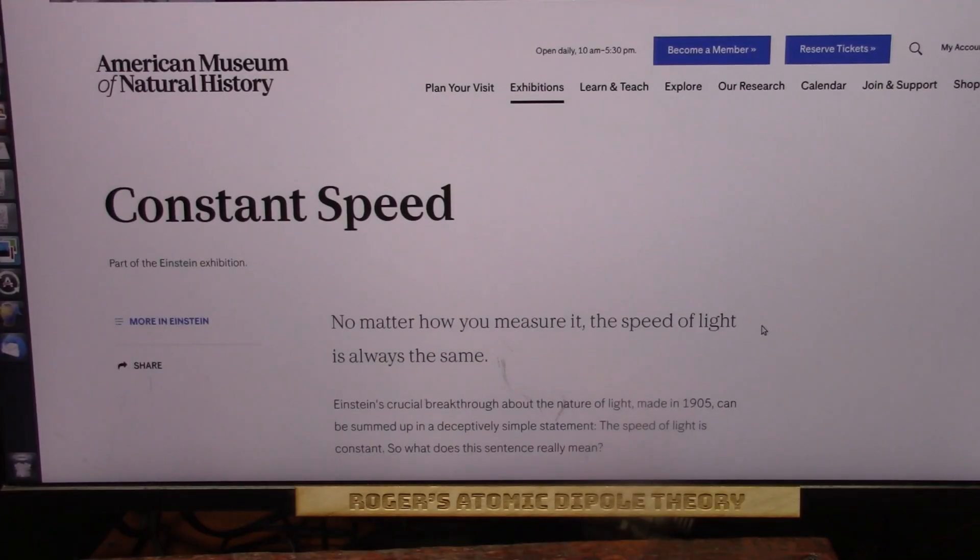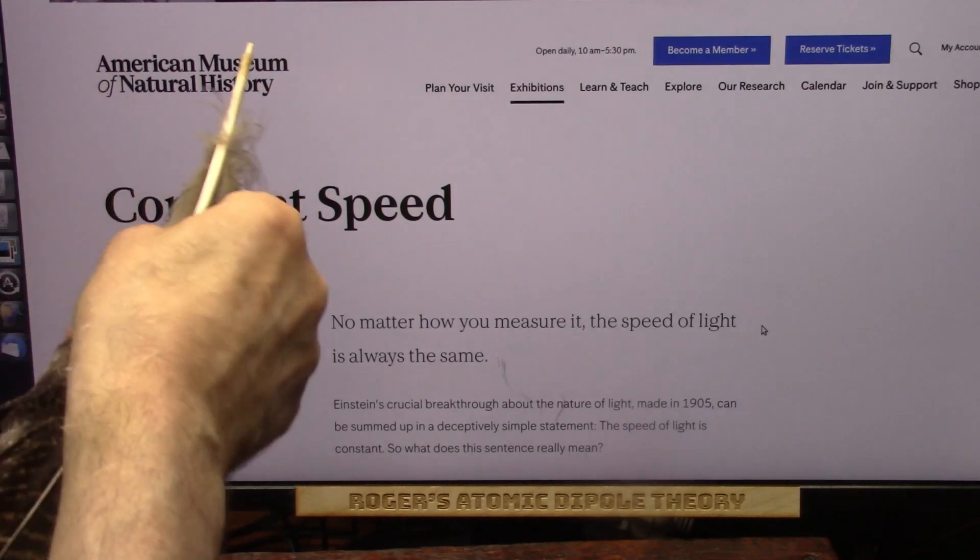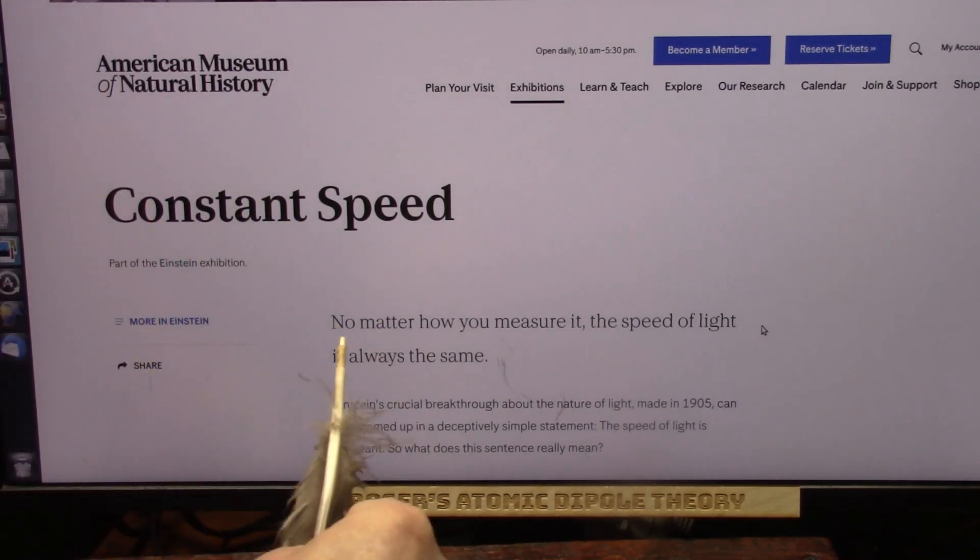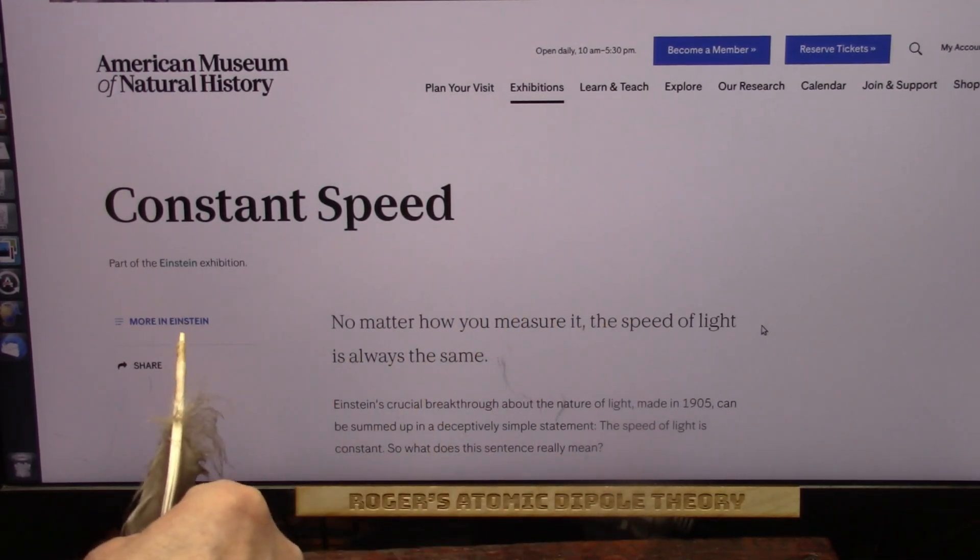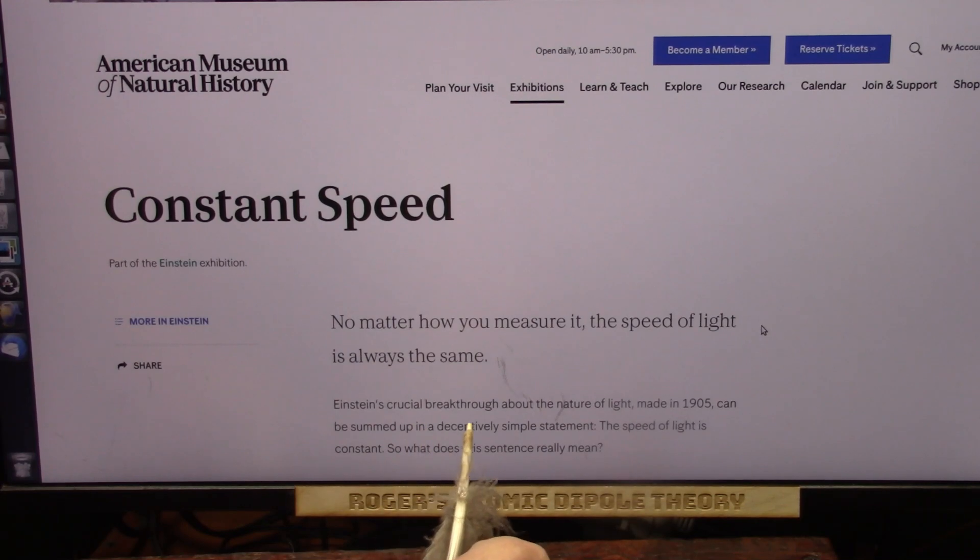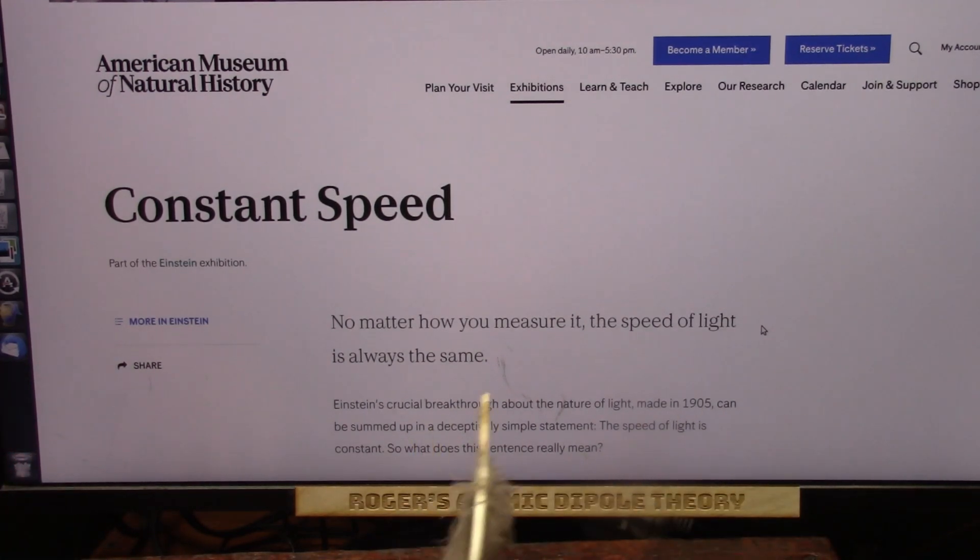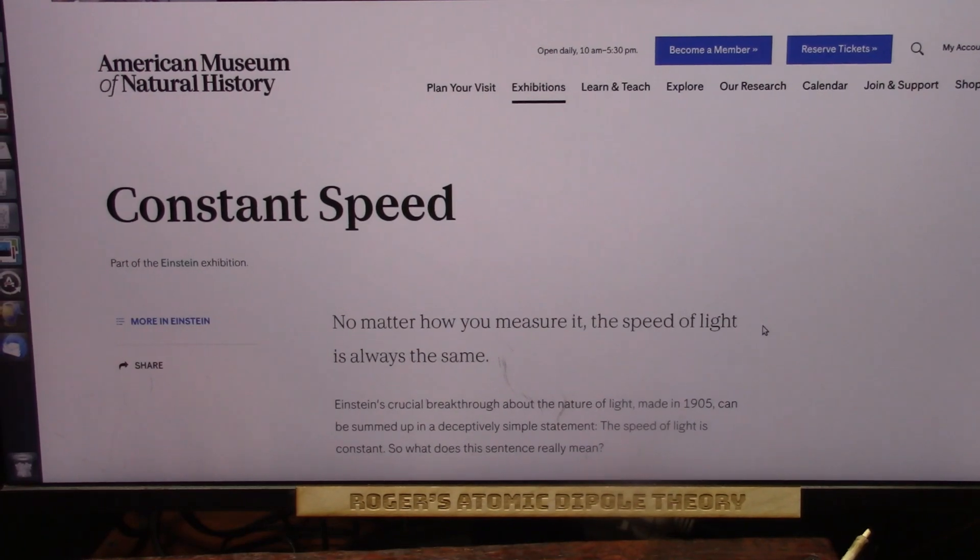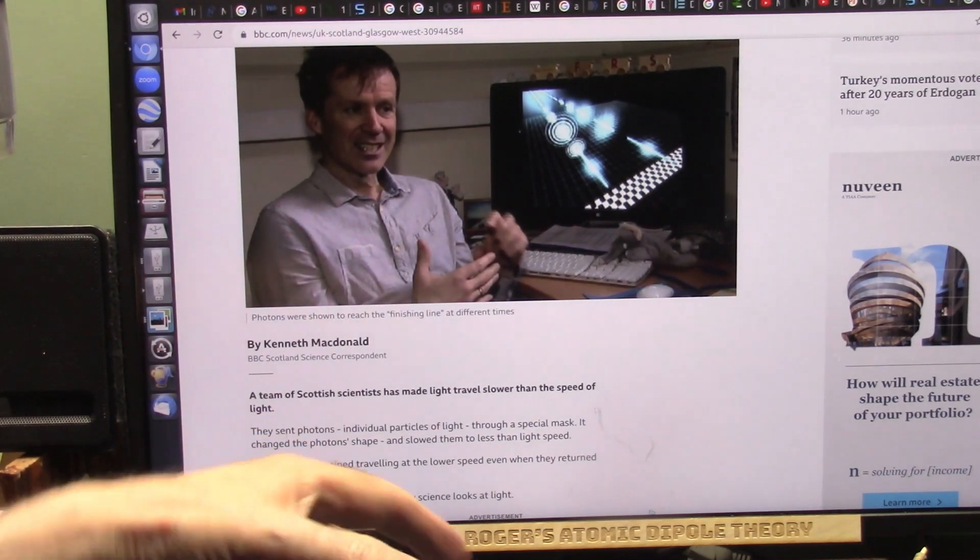Okay, virtually all science and all physicists will say the same thing. Light is a constant speed. This is the American Museum of Natural History. No matter how you measure it, the speed of light is always the same. Einstein's crucial breakthrough about the nature of light in 1905 can be summed up in a deceptively simple statement. The speed of light is constant. It means nothing because it's wrong.